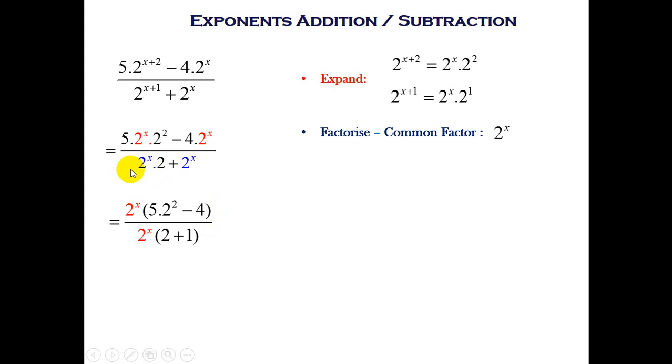We can simplify that later. Going to the denominator, you'll notice 2 to the power x is common. I've taken that out, and I'm left with 2 in the first term, and 2 to the power x divided by 2 to the power x is 1. So we're left with 2 to the power x on the numerator as a common factor. We've taken that out, and in the denominator.